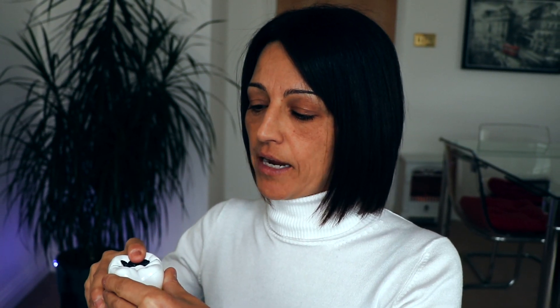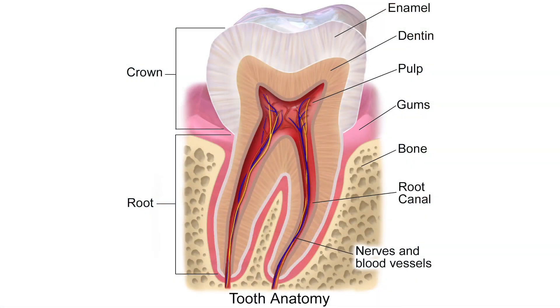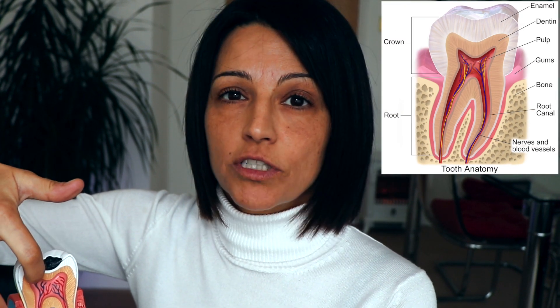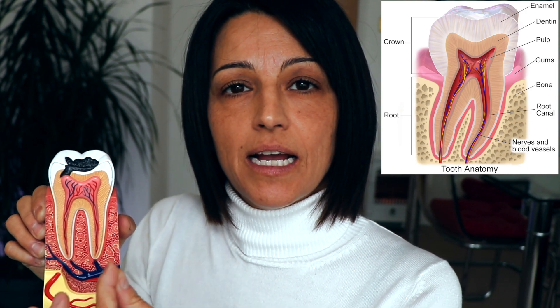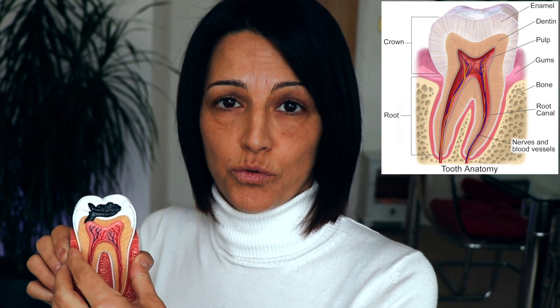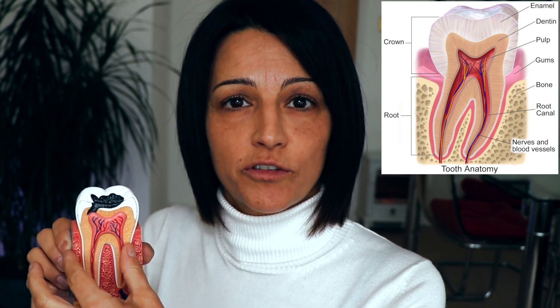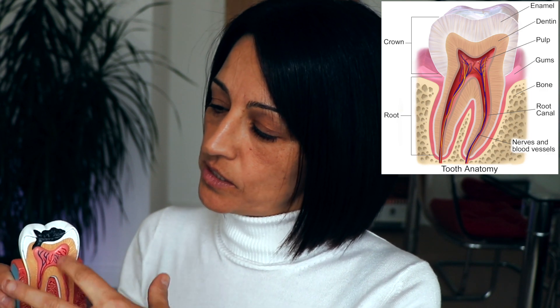The inner tissue of the tooth is dentine. The dentine is a softer tissue than the enamel and is in contact with the nerve. The nerve is what gives life to the tooth because it's made of nerves and blood vessels — it's the structure that communicates with the rest of the body through the nervous system and the bloodstream.